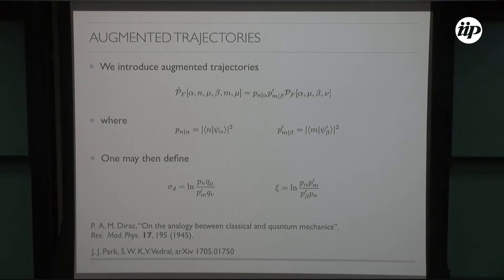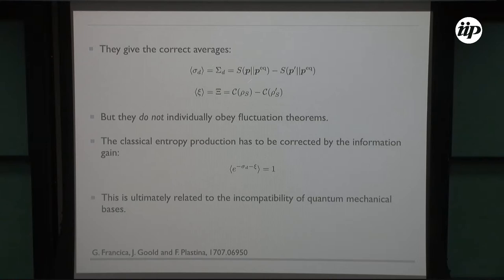It's essentially a ratio of probabilities in different bases. You have the initial states, so you have probabilities p_alpha and p_n, and the ratio of them is related to the information gain. Because your system is in basis psi_alpha, but then you want to ask how much information can you get in the basis n, and similarly for the final state.